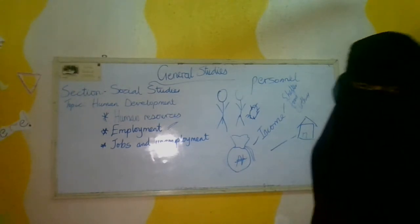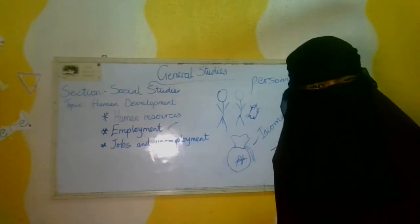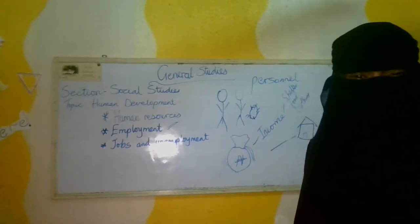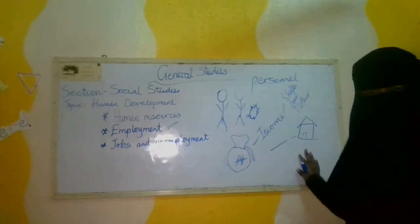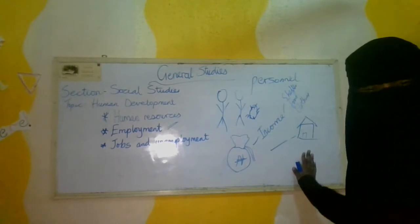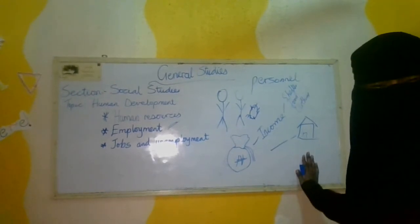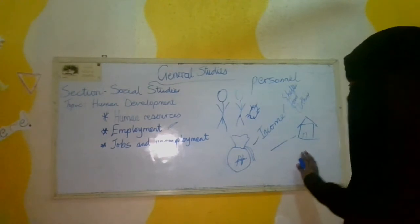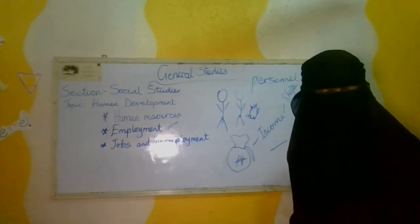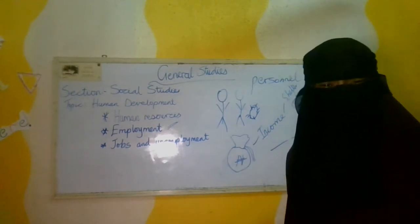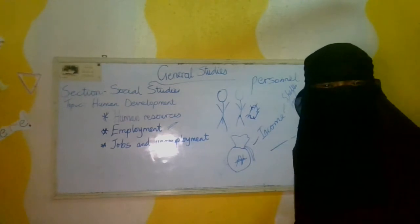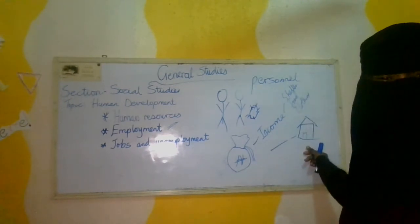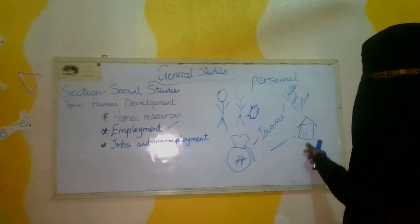Imagine if any of us fell ill — what would you do? People don't plan for illnesses. But with employment, you have something to save in the bank. You can save in an investment so that when you need it, you can take it, and you can use it when you are older. So people get employed so that when they are older and cannot work anymore, they will have something to fall back on. That is called a pension.